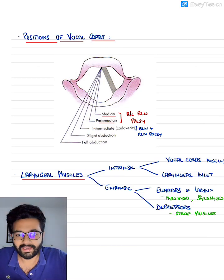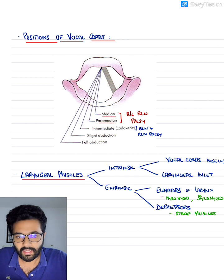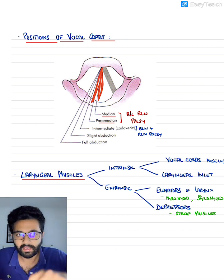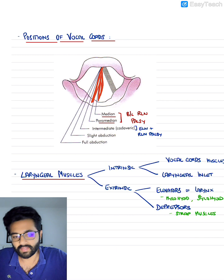So again, in bilateral recurrent laryngeal nerve palsy, the cords can be either stuck in the median or paramedian position and this can block the laryngeal inlet completely leading to difficulty in breathing or asphyxia.